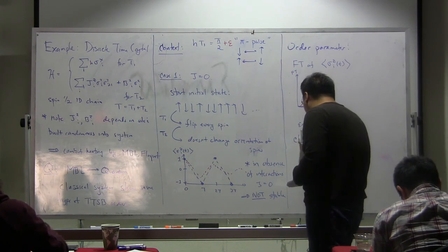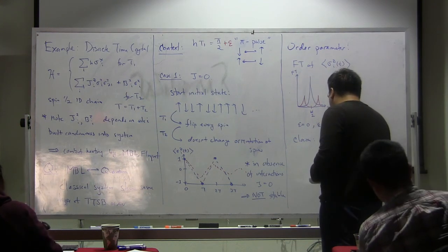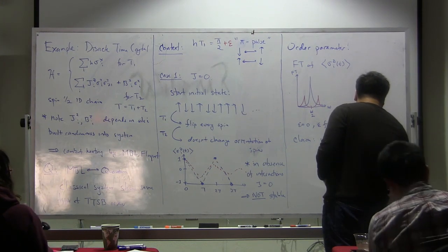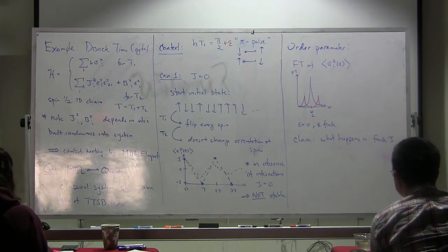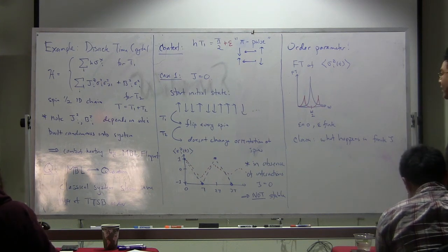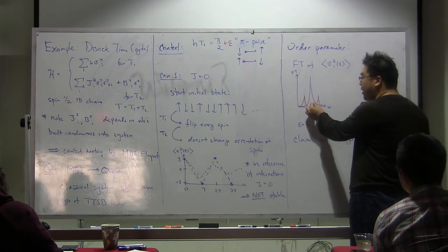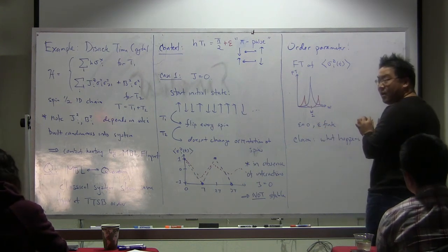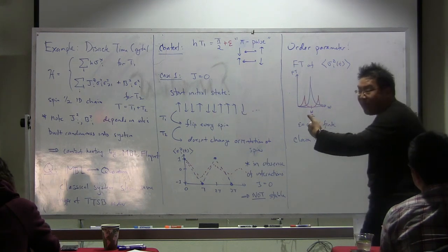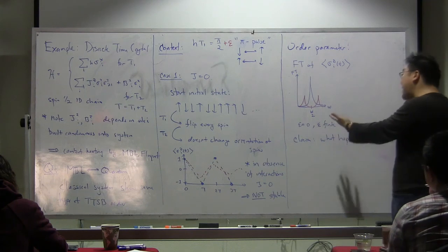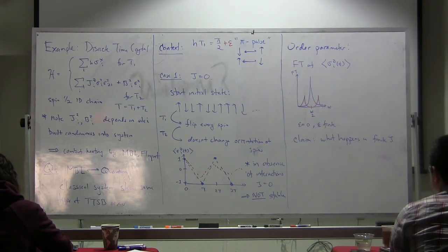The claim and question now is: what happens if one turns on interactions? What happens in the presence of finite J? The hope for this particular phase is that one turns on finite interaction strength and now the subharmonic frequency response is truly stable to some finite perturbation epsilon. You'd like there to be some finite epsilon, system-size independent, with which the system remains rigid when one has finite interaction strength. In this context, that's what people mean when they say that interactions can endow the system with rigidity.